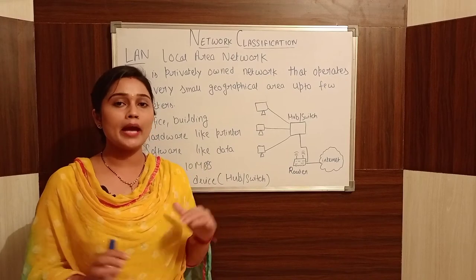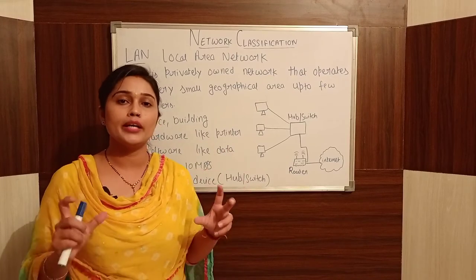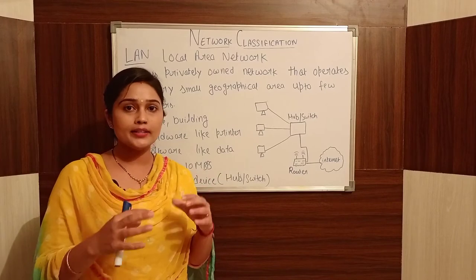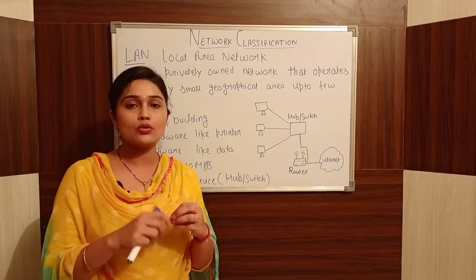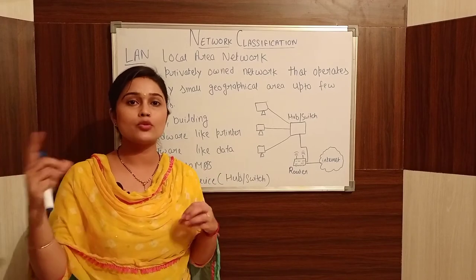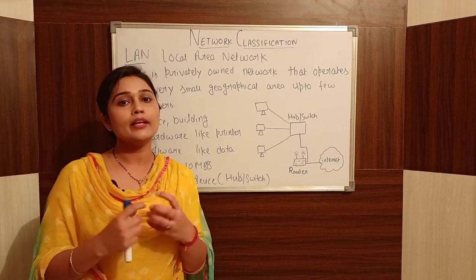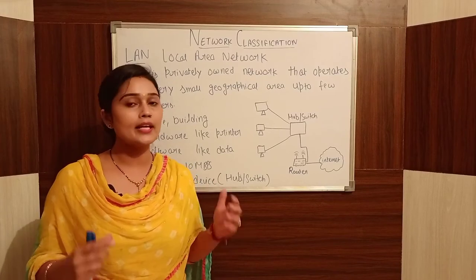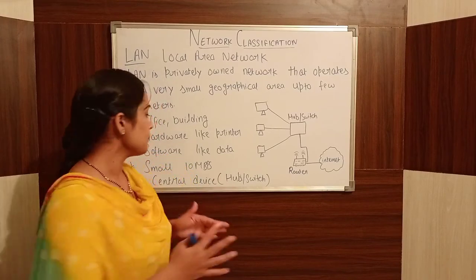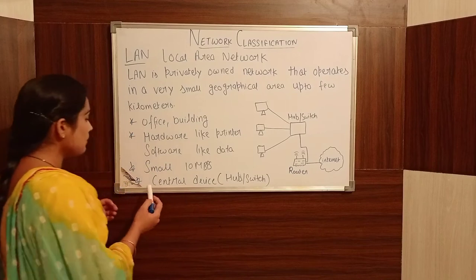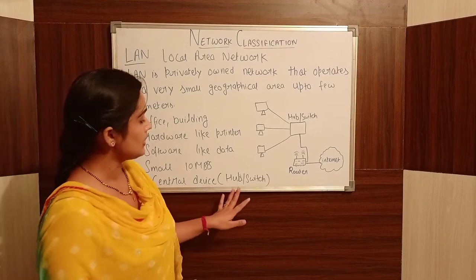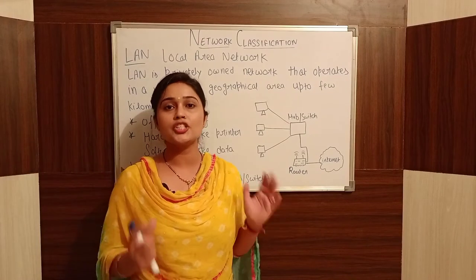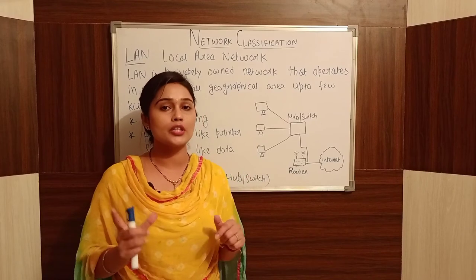This means that if there is a network within one campus, it will work. But if you think about sharing between one campus and another separate campus, that will not be possible — it will fail. Next is the central device. A LAN uses a central device, which is a hub or switch.